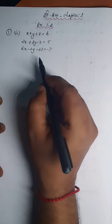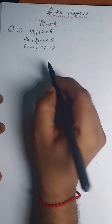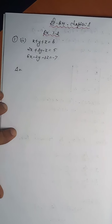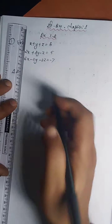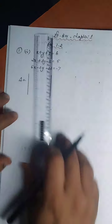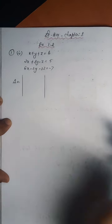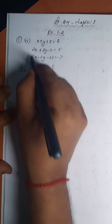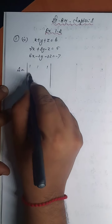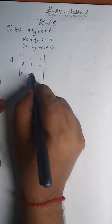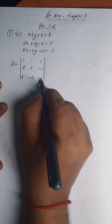Solving the non-homogeneous equations of three unknowns by the determinant method. First, find delta. Delta is equal to a 3 by 3 minor. Write the coefficients of x, y, and z: 1, 1, 1; then 2, 3, minus 1; third row 6, minus 2, and minus 3.